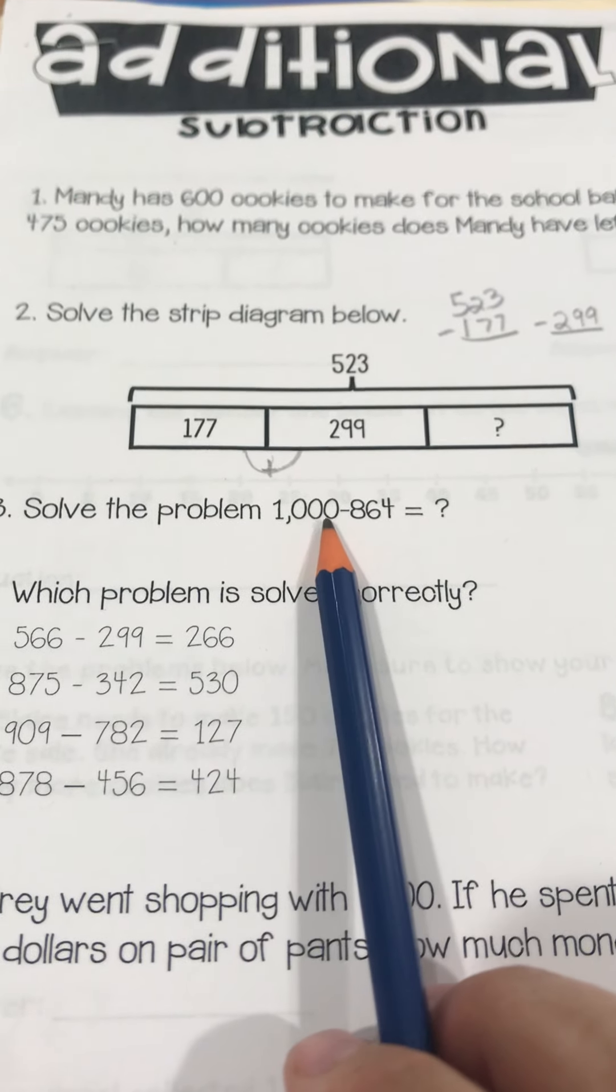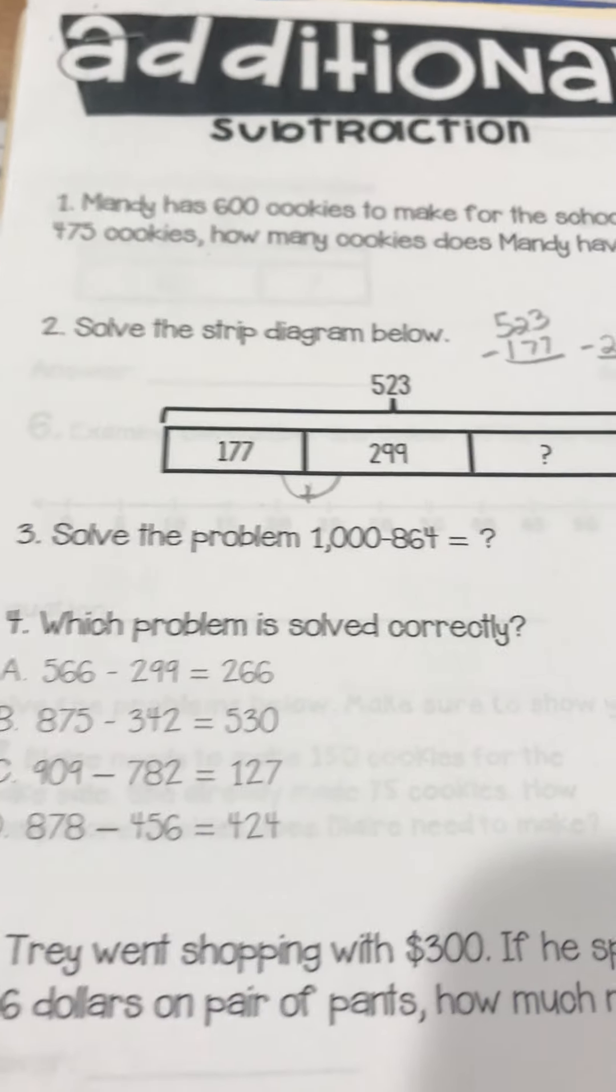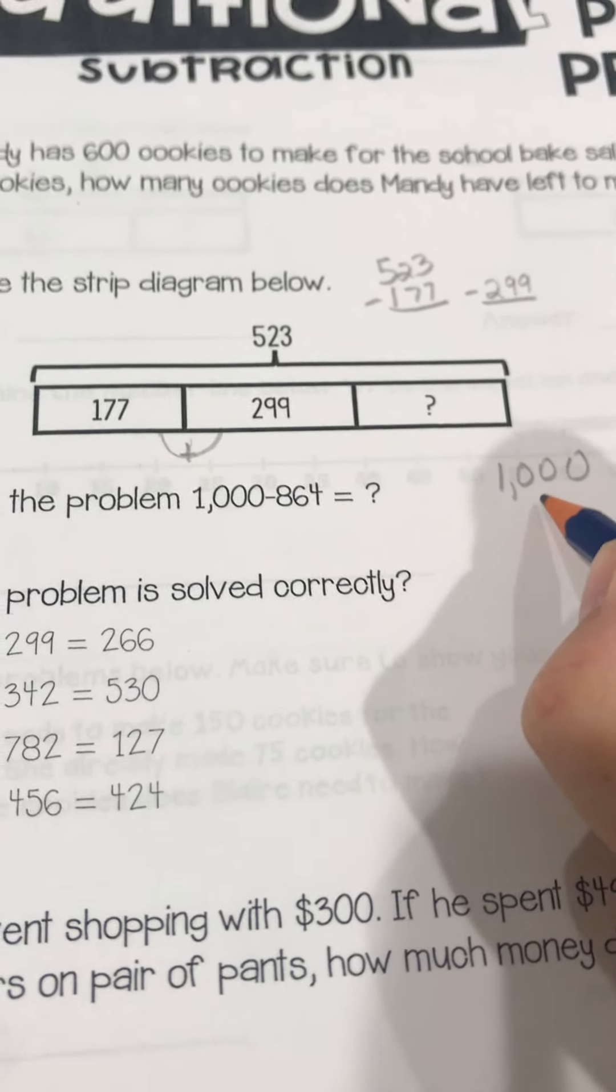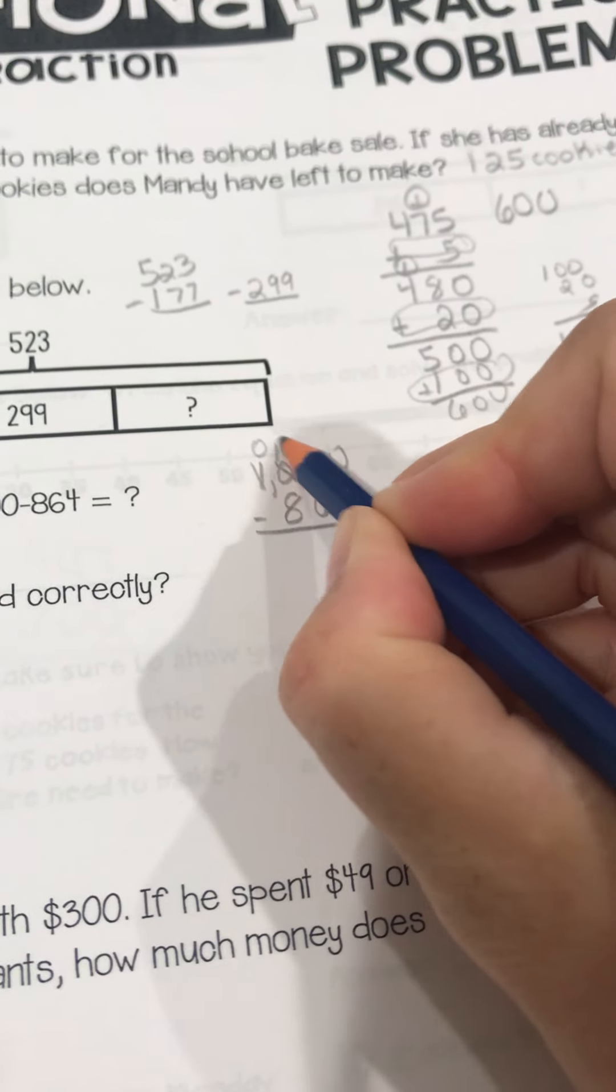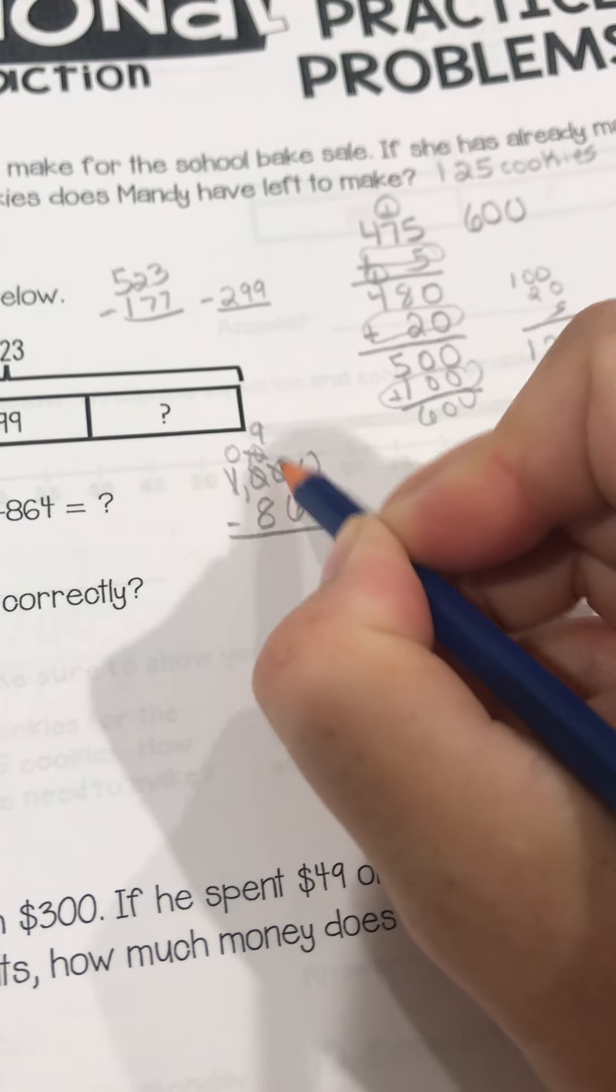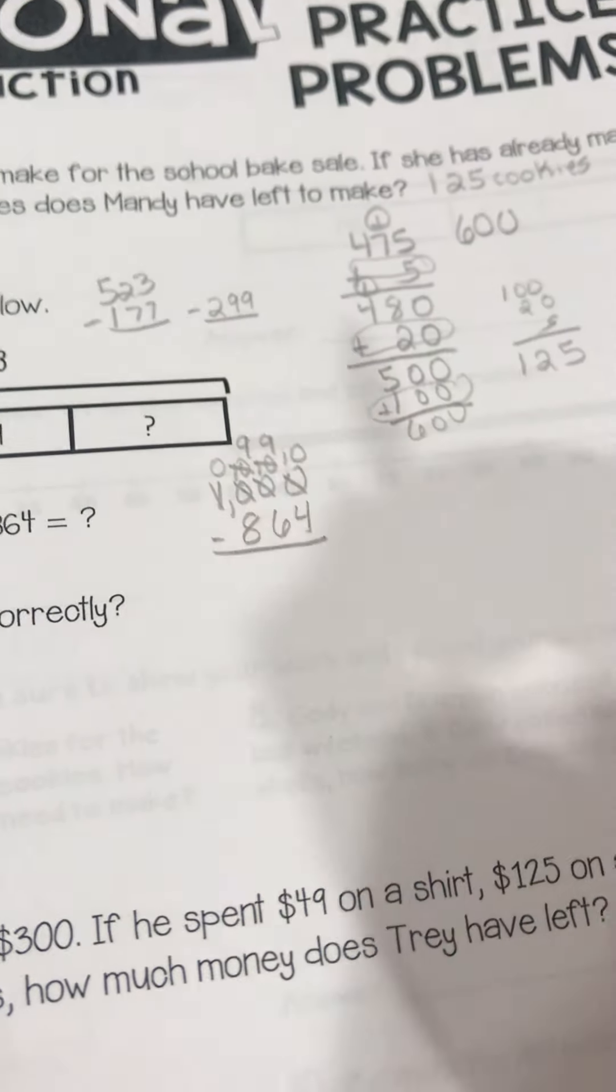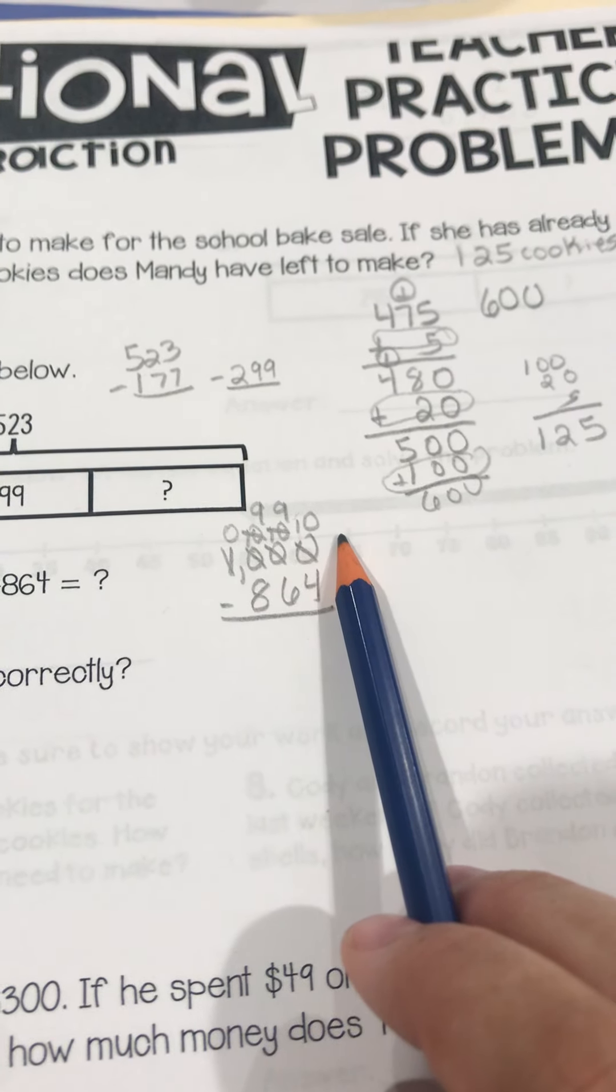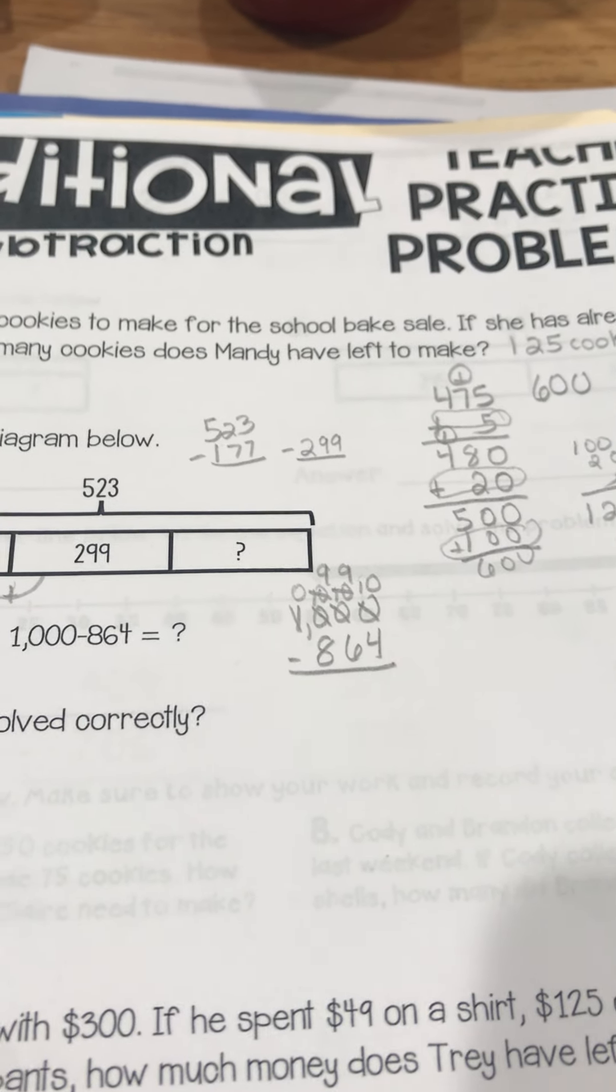This one, again, is across zeros. I would do the add-on method, but just in case you are deciding to do traditional subtraction, it should look like this. There should only be one 10 on the top when you're borrowing. I'll let you do the subtraction, but your borrowing should look like that.